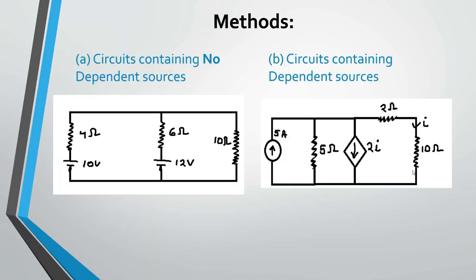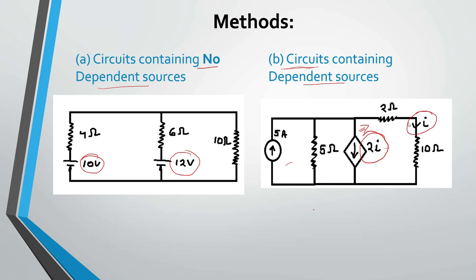So let's start. There are basically two categories. The first is when the circuit contains no dependent sources — meaning all the sources are independent, as you can see in this example. The second is when the circuit contains dependent sources, like in this case, where the current supplied by this source depends upon the current flowing in this branch.